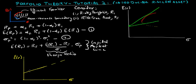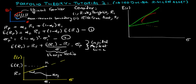The capital market line is represented in expected return and volatility space, and goes from RF to point K, where point K corresponds to the expected return and the volatility of the risky portfolio. The slope of the capital market line is just the Sharpe Ratio, which is the expected return on the risky portfolio above the risk-free rate divided by the volatility of the risky assets.